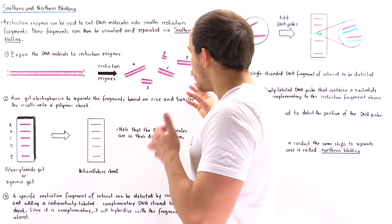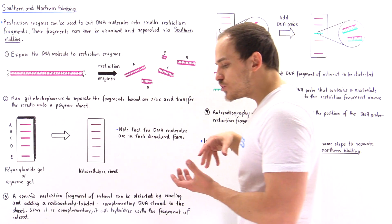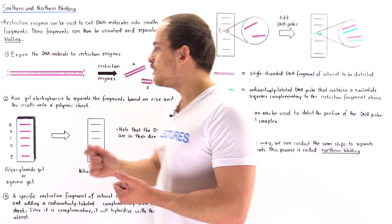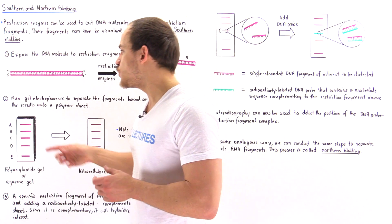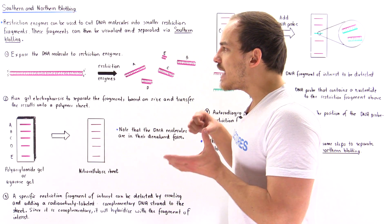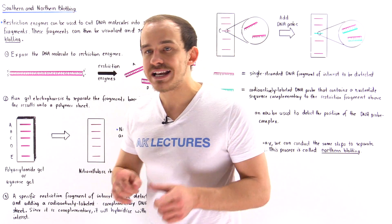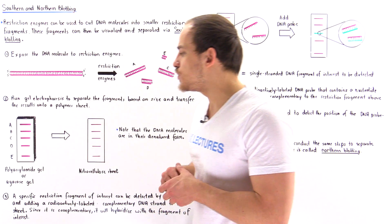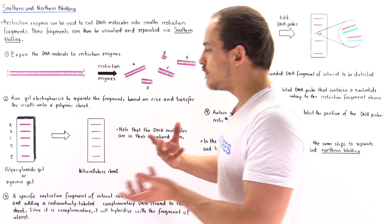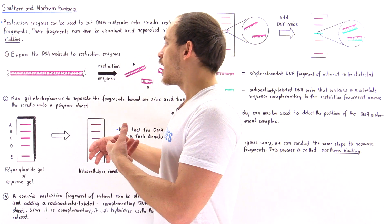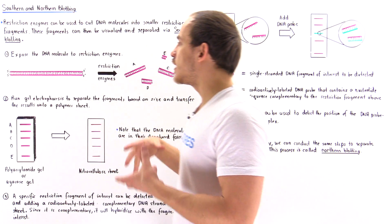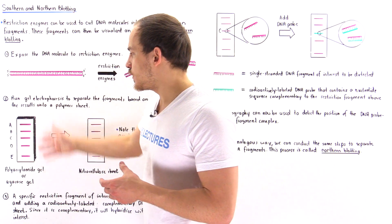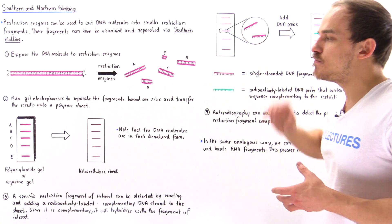Step two: we take these fragments and place them into a solution that denatures the double helix structure, so now we have single-stranded individual DNA molecules. We then place them into a gel electrophoresis setup. If the DNA molecule isn't too large we can use polyacrylamide gel, but if the DNA molecule is very large we use agarose gel, which has a larger pore size. The gel we use is determined by the size of the initial DNA molecule. The gel electrophoresis separates the DNA fragments based on size.